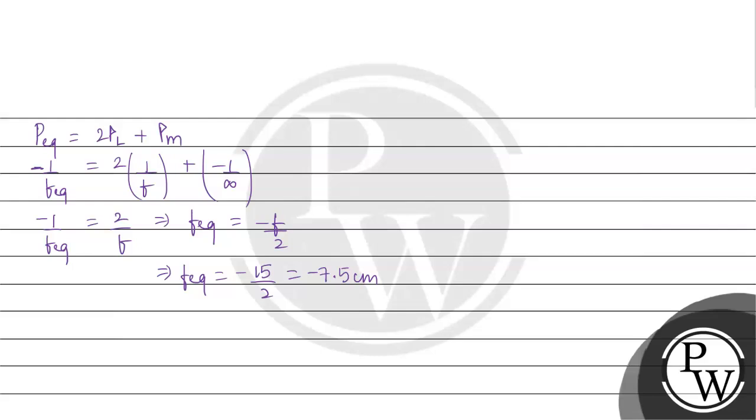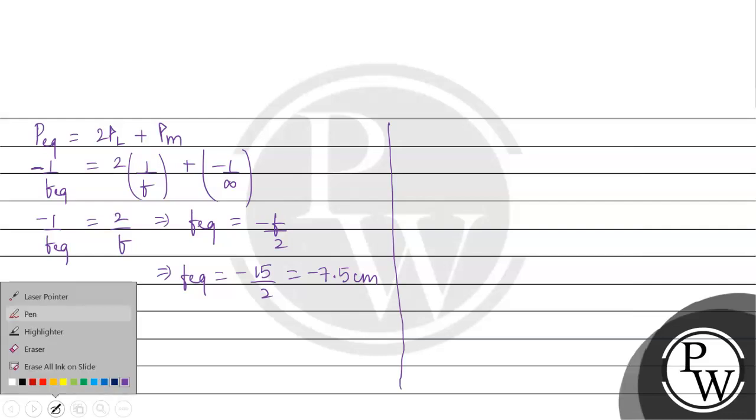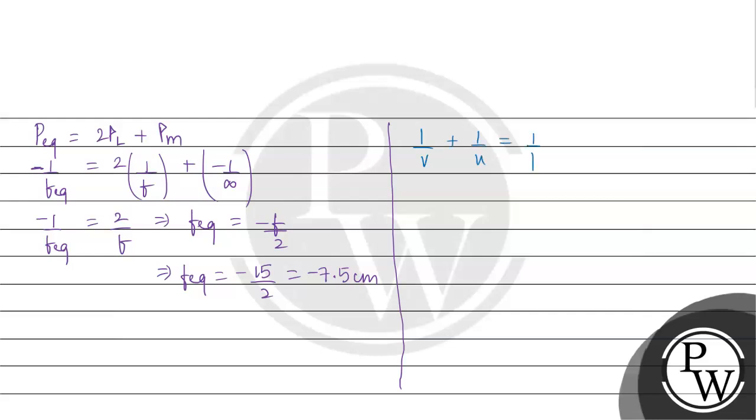Now, to pura system ab ek mirror ke tarah behave kiya. Kaun sa hai mirror? F_equivalent jiska nikal ke hai. Since pura system mirror ke tarah behave karega, to mirror wala formula use karoge: 1 by V plus 1 by U equal to 1 by F.